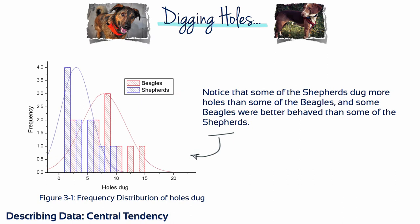Figure 3-1 is a histogram of the data. Notice that there's a difference between the two breeds. The beagles seem to dig more holes than the German Shepherds. But this conclusion is based on a general impression or a subjective interpretation of the figure. In fact, this conclusion is not always true.